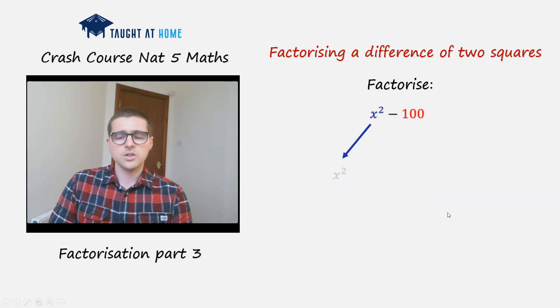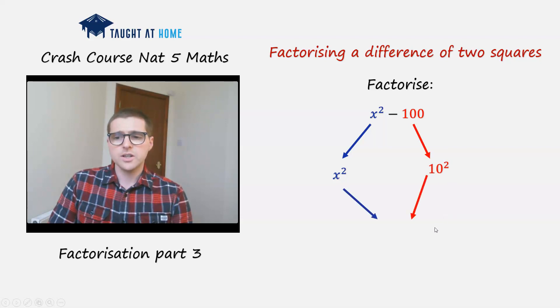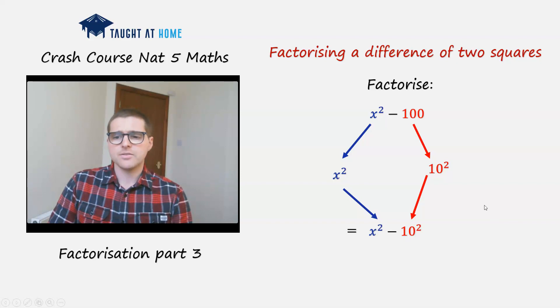Just another example. We've got x squared minus 100. So we've got 10 squared for the 100. The difference of two squares is x squared minus 10 squared. Therefore, we can write it as x plus 10 times x minus 10.